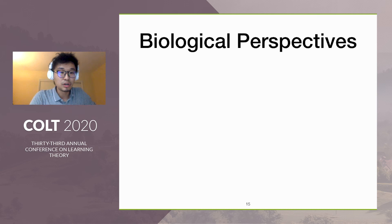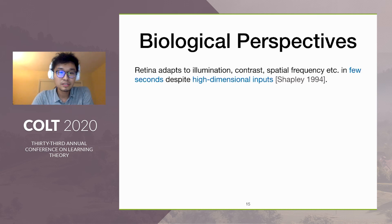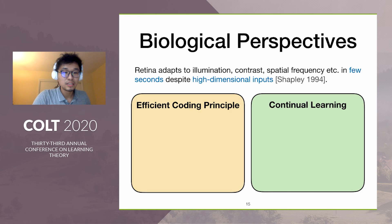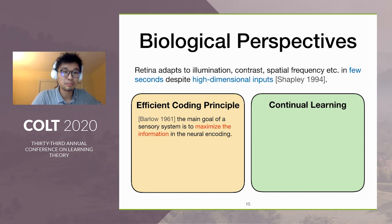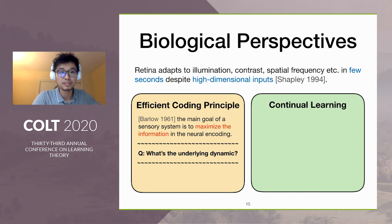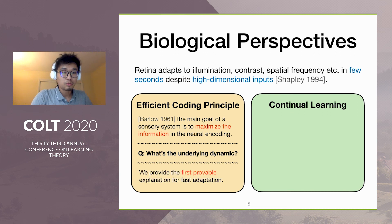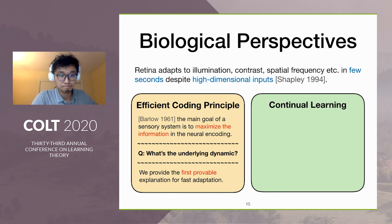Now let us put our theoretical result into the biological context. Recall that the retina efficiently adapts to different environments, in spite of the high-dimensional input. This relates to two important biological perspectives. First, the efficient coding principle, which states that the main goal of a sensory system is to maximize the information in neural coding. While this finds great success in explaining retina in a single environment using PCA, we don't know what would be the underlying dynamic if the environment is changing. In this work, we provide the first provable explanation for fast adaptation using Oja's rule, explaining the dynamics of retina underlying the efficient coding principle.